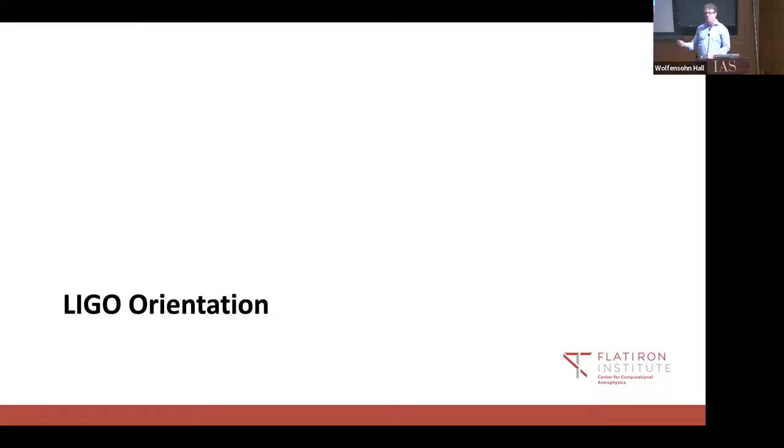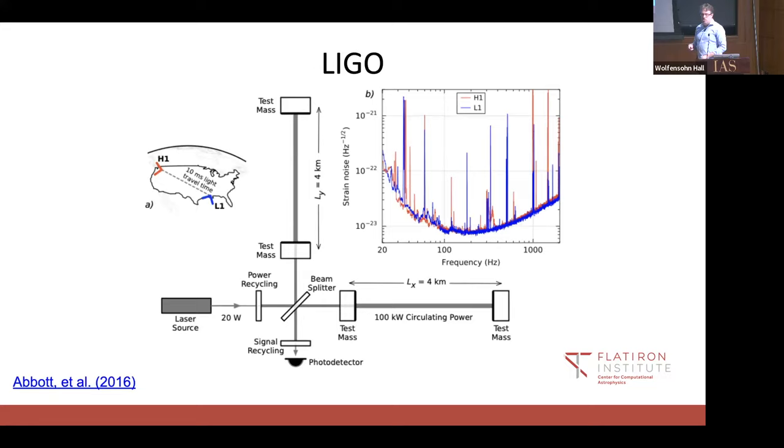I'm going to be talking about gravitational waves from stellar mass black holes. We're going to zip through a quick orientation of the instruments we use to detect these signals. I'm a member of the LIGO collaboration. We are now the LIGO, VIRGO, and KAGRA collaboration. LIGO is an American project that has detectors in Washington State and Louisiana.